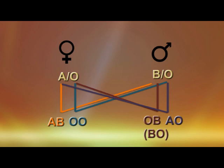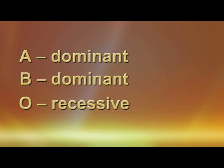Just to recap, the A gene and the B gene are dominant over the O gene, and the A and the B are codominant.